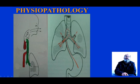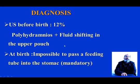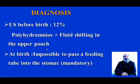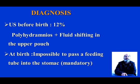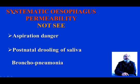We can also have reflux of gastro-oesophageal liquid into the lungs, which can be very harmful, and aspiration danger from the upper pouch. The diagnosis of oesophageal atresia can be done by ultrasound before birth. In 12% of cases we can have polyhydramnios with fluid pooling in the upper pouch. At birth, diagnosis is easy with the impossibility to pass a feeding tube into the stomach, and this test is mandatory for each baby to avoid aspiration danger, pooling of saliva, or bronchopneumonia.